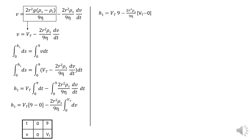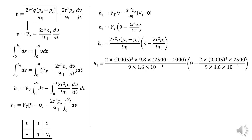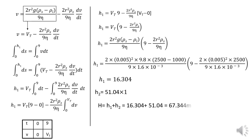Further calculation gives: s equals V_t·t minus (2r²·rho_s / 9·eta)·V_t. So the displacement s equals V_t·9 minus (2r²·rho_s / 9·eta). Evaluating numerically: the first result is 16.304. The second result is 51.04. The final answer is 67.344. This is the result.